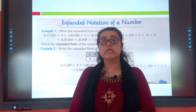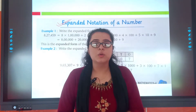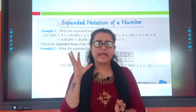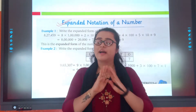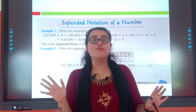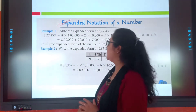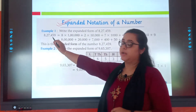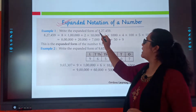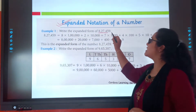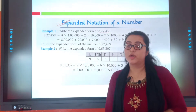That means you have to expand the number. I know my kids have a little bit idea of what expanded form is, but in this we will have a clear image of what we will be doing. Let's start. Our first example is: write the expanded form of 8,27,459.